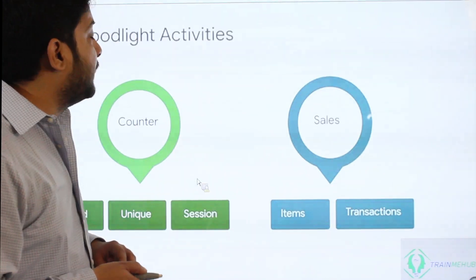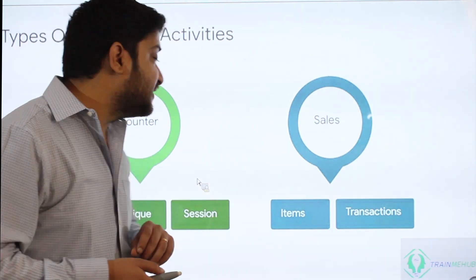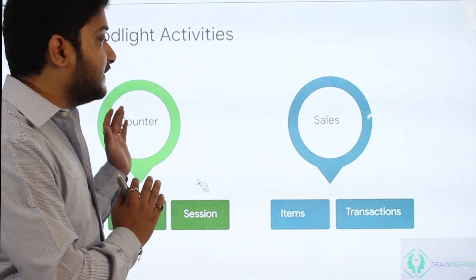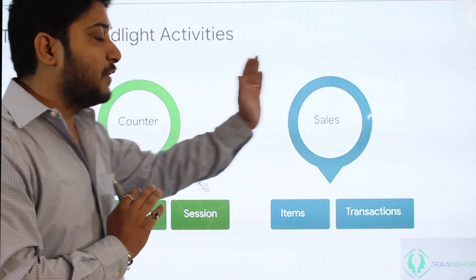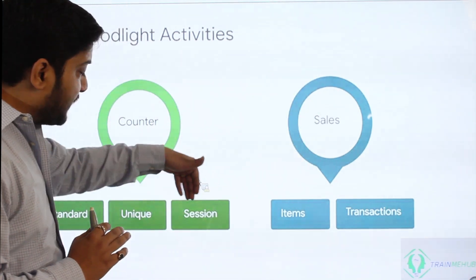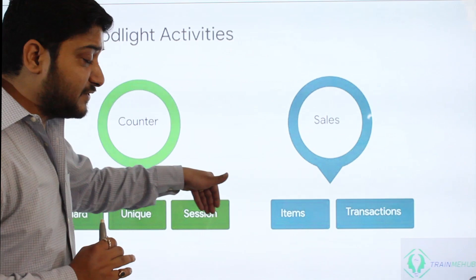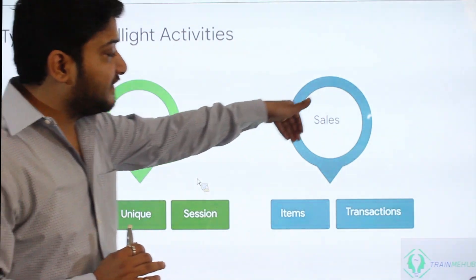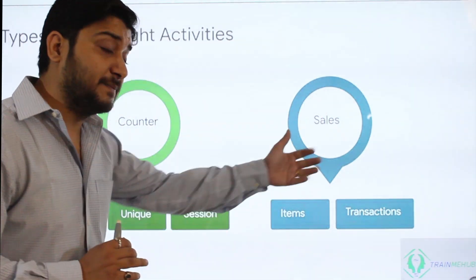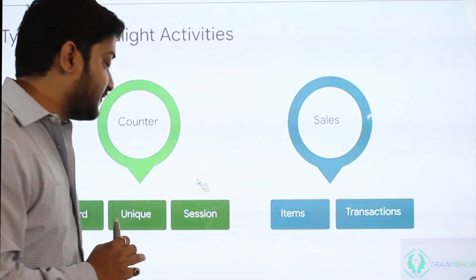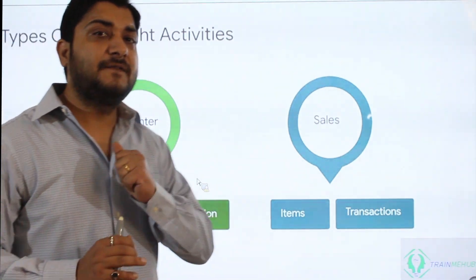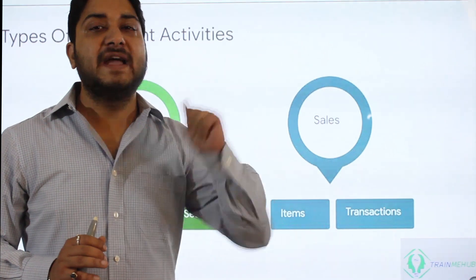Now let's talk about the types of floodlight tags available in DoubleClick Campaign Manager. There are two types: counter and sales. The counter type is subdivided into three different tag types, and the sales type is subdivided into two types.